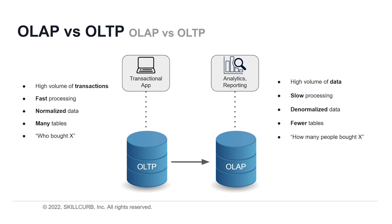OLTP, on the other hand, is optimized for processing a massive number of transactions. OLTP systems are designed for use by frontline workers — for example, cashiers, bank tellers, hotel desk clerks, etc. — or for customers using self-service applications, such as online banking, e-commerce, and travel reservations.